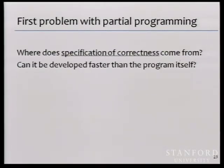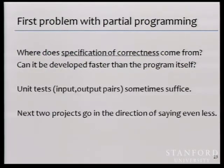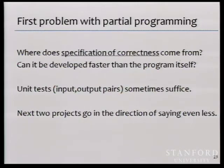Partial programs may be a way for the programmer to communicate what they know about the desired program and for the synthesizer to fill in the missing details. However, there is the problem of where the specification of correctness comes from — very often writing that is much harder than writing the implementation itself. The next two projects go much further in the direction of how to obtain specifications to guide the search.